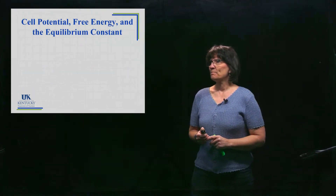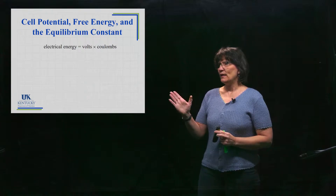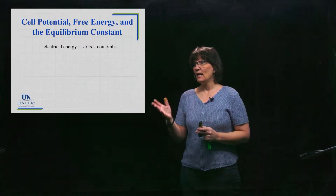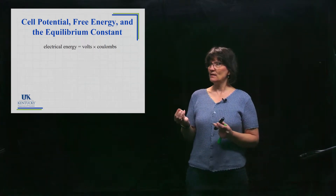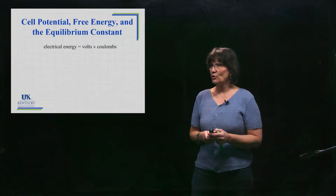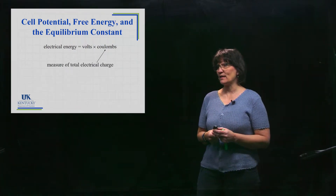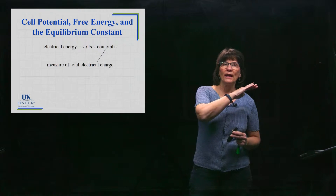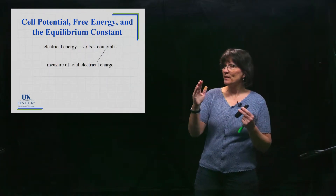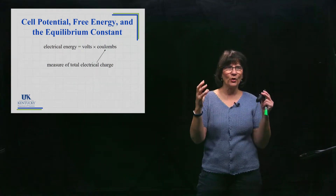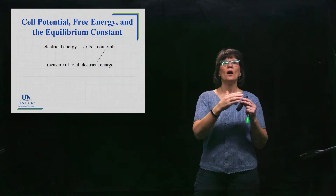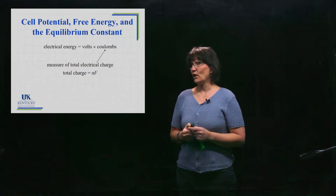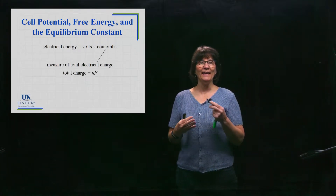We need to understand that electrical energy — energy produced by electricity — consists of volts times charge. Coulombs is the charge of the electrons passing through, so when a wire has electricity flowing through it, those electrons carry a charge measured in coulombs. You take the total coulombs times the voltage across the wire and you will have the energy produced by those electrons flowing.